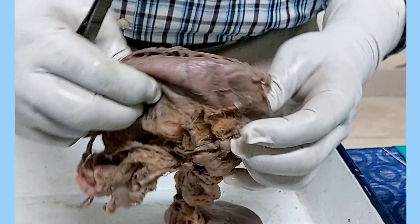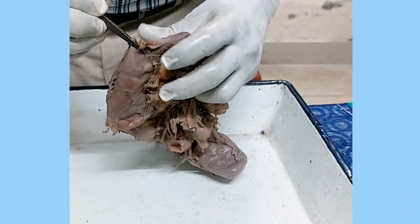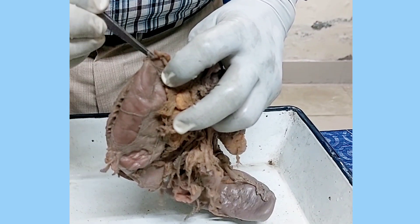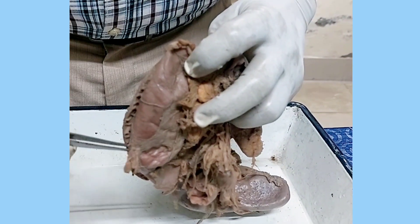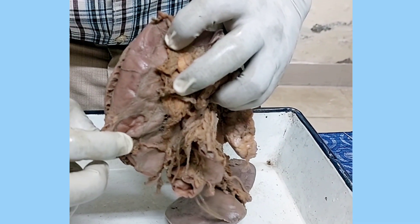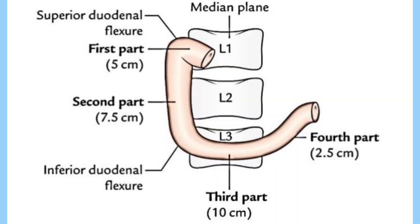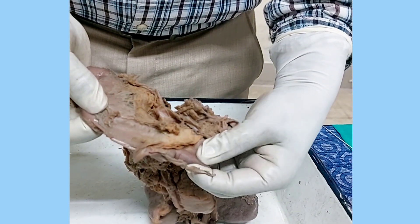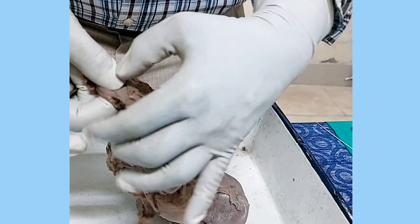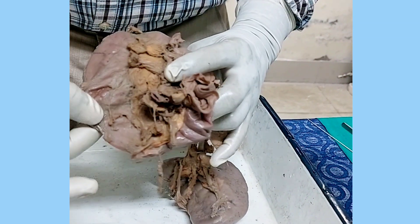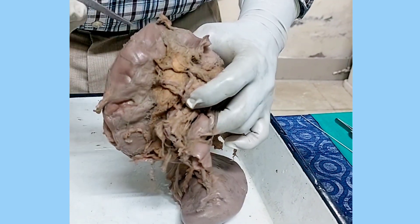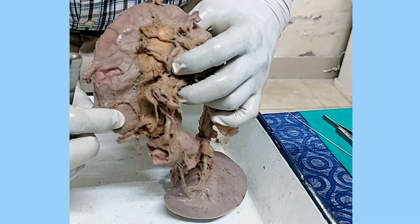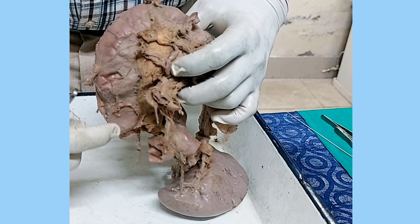The second part starts at the superior duodenal flexure at the level of L1 vertebra and extends downwards vertically up to L3 vertebra. Here you will get another bending, from which it turns towards the left side as the horizontal part. This bending is called the inferior duodenal flexure. So between the superior duodenal flexure and inferior duodenal flexure is the second part, or vertical part, of the duodenum.